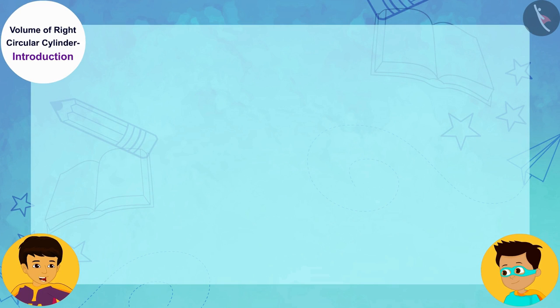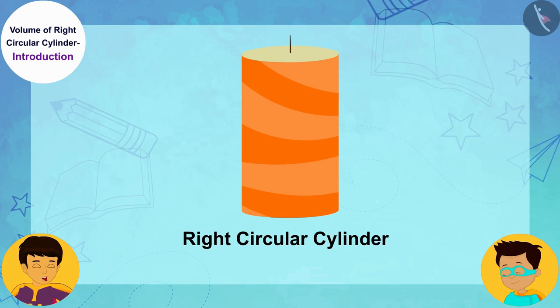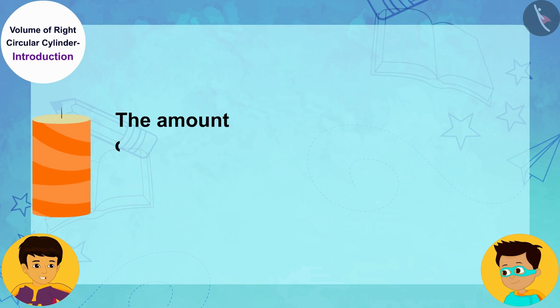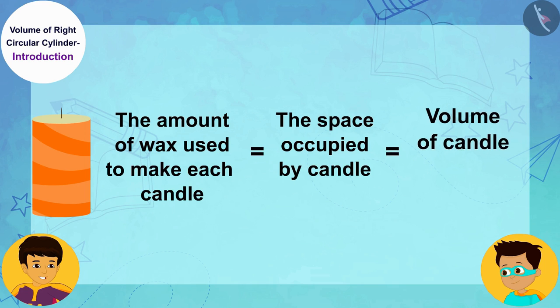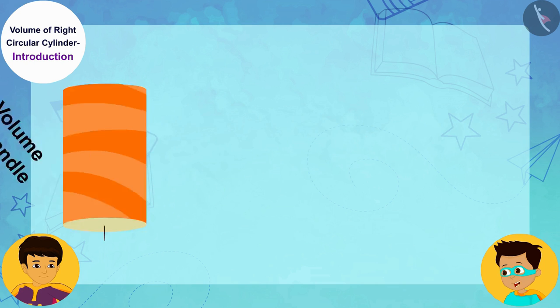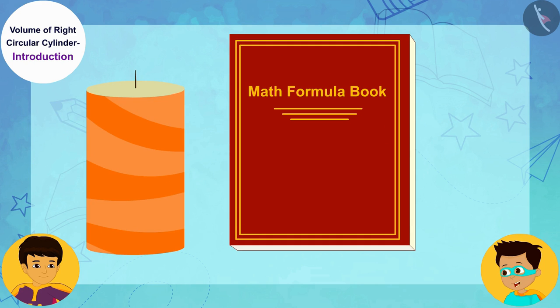Look, Thomas, each candle is a right circular cylinder. The amount of wax used to make each candle will be equal to the space it occupies, that is, its volume. In the previous standard, we learned the formula for the volume of a right circular cylinder.